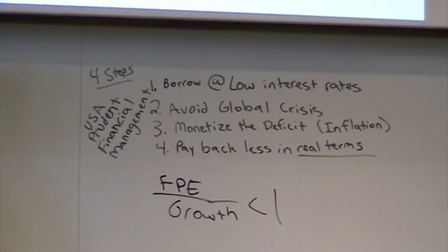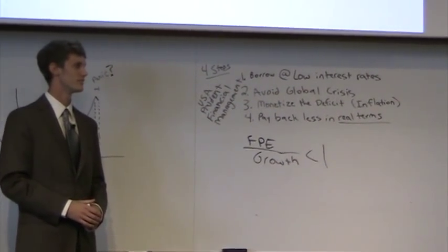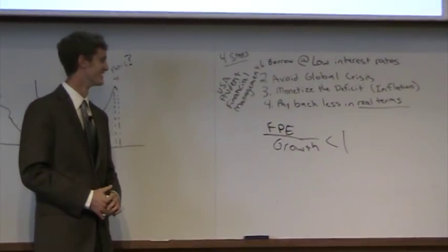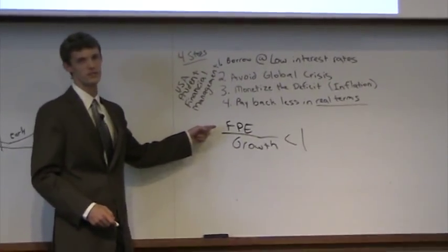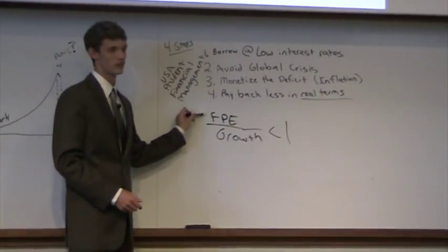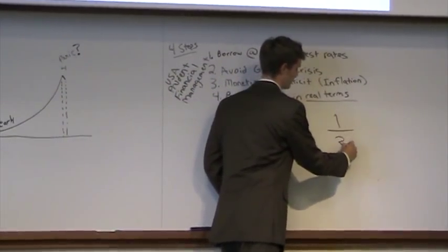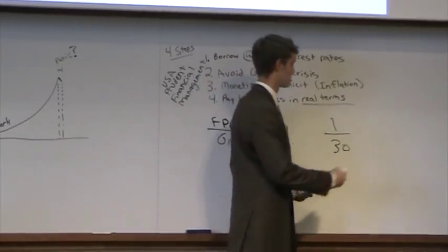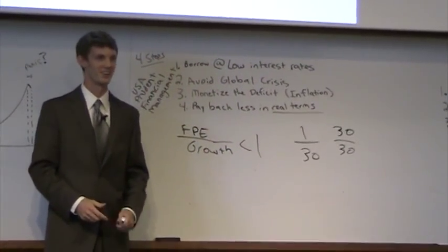Price-to-earnings growth — PE divided by your growth. So your growth is 10% and your price-earnings ratio is 10, you have a PEG ratio of 1. The goal is to have a price-earnings ratio of 10 and a growth rate of like 30%, because then you have 10 over 30, which is less than 1. And those are the kind of companies that I'm looking for. Eventually you hope that the price-earnings ratio will inflate to 30, and you've just made a lot of money.